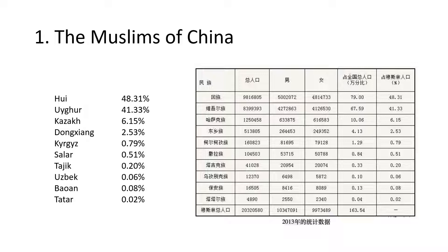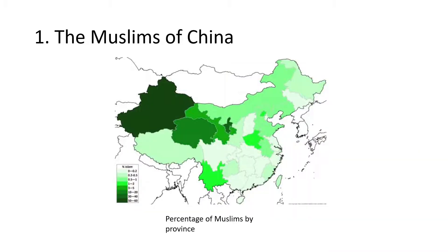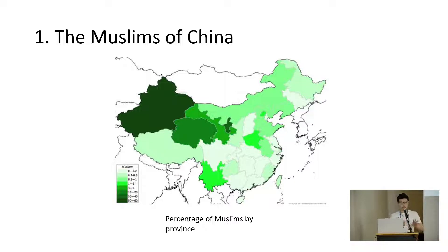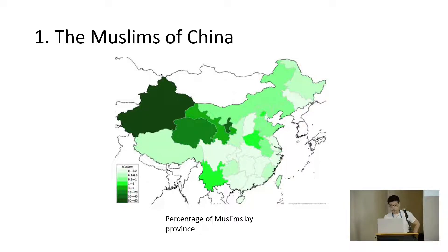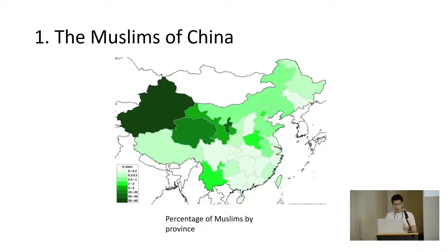The Chinese Tatars came from Kazan, the majority of them via emigration. This picture shows roughly the distribution of Muslims all over China — the more west you go, the more Muslim population you can find. Muslims don't just come from one place in China; that's another misconception. They are not all Uyghurs, not all from Xinjiang or East Turkestan. They're everywhere in China.